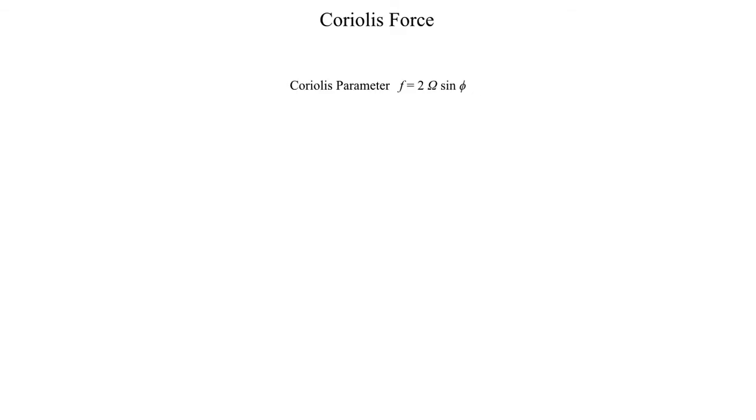A few things should be noted about this Coriolis parameter f. In the northern hemisphere, by convention, we define latitudes in the northern hemisphere to be positive values of latitude. So 30 degrees north would be positive 30 degrees, 60 degrees north would be positive 60 degrees when we're going to plug an angle into the sine function here. And since our angle is positive, that means our Coriolis parameter also has to be positive if we're in the northern hemisphere.